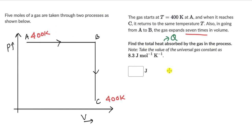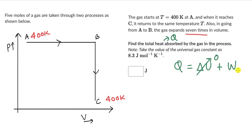From the first law of thermodynamics, Q equals delta U plus work done by the gas. The two processes start at 400K and end at 400K — there is no change in temperature, which means no change in internal energy. So delta U is zero, meaning the heat absorbed equals the total work done. For process BC, delta V is zero, so work done in BC is zero. We only need to find the work done in process AB.